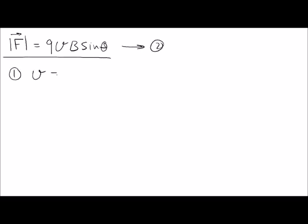First, what if the velocity equals zero? That means the charge is not moving in the magnetic field — you still have the magnetic field, but the charge is at rest. Substituting V equals zero gives a zero force. We conclude: if the charge is not moving, there is no force on it. The magnetic field does not exert force on a charge at rest, which is opposite to the electric field — the electric field produces force on a charge whether it is moving or not. But for the magnetic field, the charge must be moving.